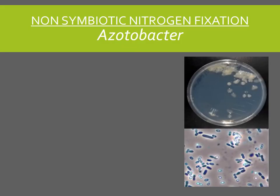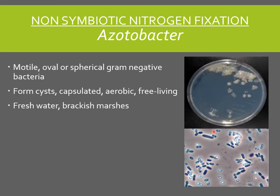Azotobacter is a gram-negative capsulated bacteria. As you can see it is capsulated, which is the reason it forms mucoid colonies when grown on agar. It has an oval or spherical shape with a size ranging from 2 to 4 micrometers in diameter. The organism is motile and can form thick-walled cysts which act as the resting state of this organism. It is found in fresh water or brackish marshes and also in neutral to mildly alkaline soils. Azotobacter is aerobic and free living, making it a classical example of non-symbiotic nitrogen fixation.